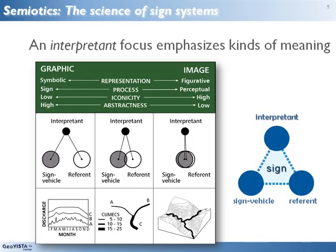It illustrates, for example, that symbolic representations of the kind often used in science have highly abstract sign relations, while figurative representations of the sort used in domains like urban design have highly iconic sign relations.